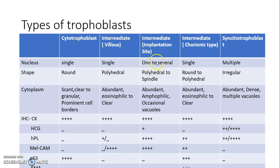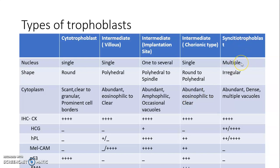The implantation site intermediate trophoblasts have single or multiple nuclei, polyhedral to spindle shaped, with abundant amphophilic cytoplasm with occasional vacuoles. The chorionic type trophoblasts also have a single nucleus, round to polyhedral in shape, with abundant eosinophilic to clear cytoplasm. Syncytiotrophoblasts have multiple nuclei, irregular shape, and abundant dense cytoplasm with multiple vacuoles.